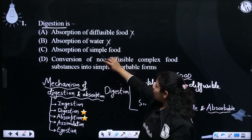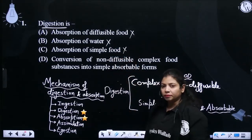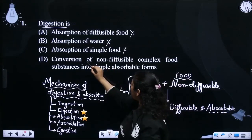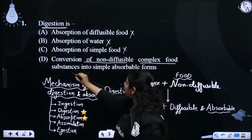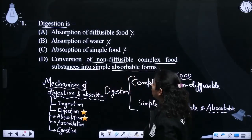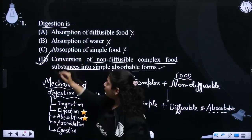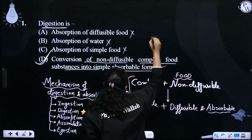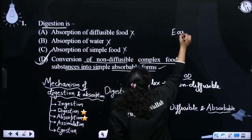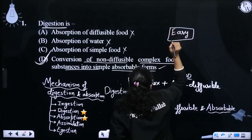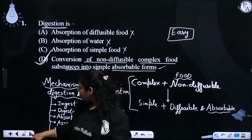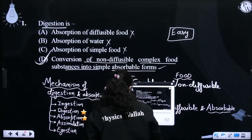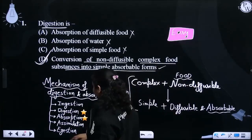Absorption of water भी answer नहीं होगा। Absorption of simple food नहीं — यह तो absorption की ही definition हो जाएगी। यहाँ पर correct answer है: conversion of non-diffusible complex food substances into simple absorbable forms। Fourth option यहाँ पर correct होगा। Difficulty level की बात करें तो यह easy होगा, क्योंकि यहाँ पर आपसे direct definition पूछी गई है। यह easy category का question है।